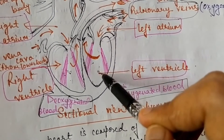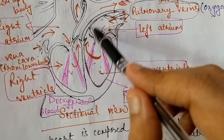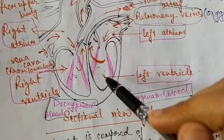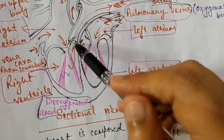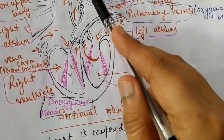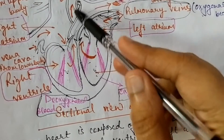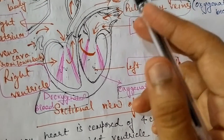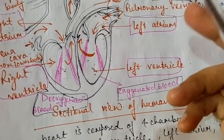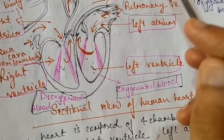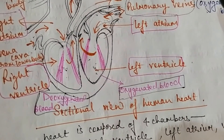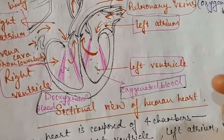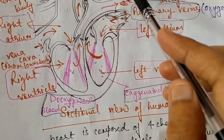When blood has come into the left atrium through the pulmonary vein, the left atrium contracts and blood passes into the left ventricle. When the left ventricle contracts, the oxygenated blood is pumped out through the aorta, which is the largest artery, and travels to the whole body except the lungs.